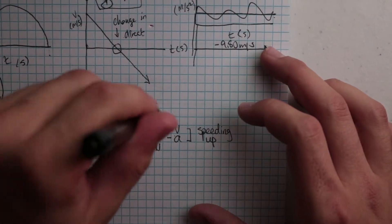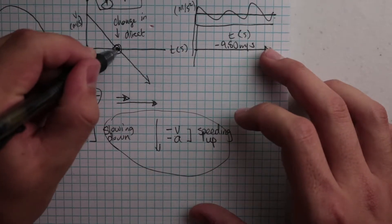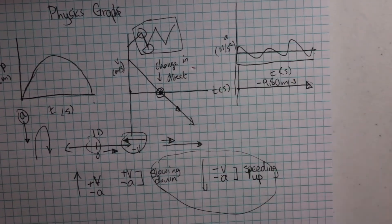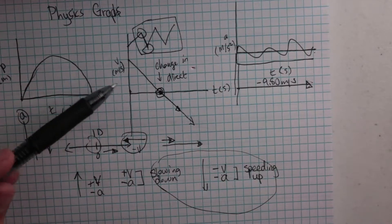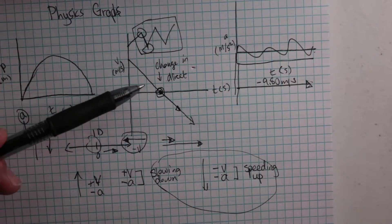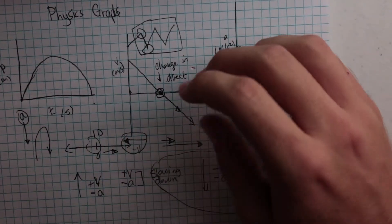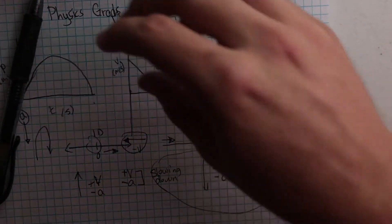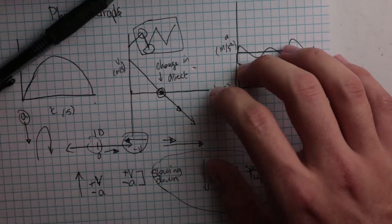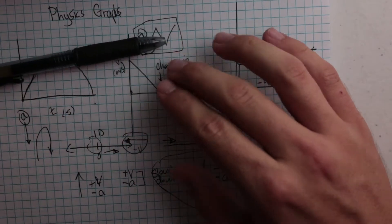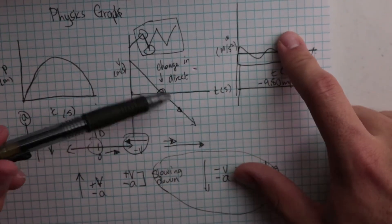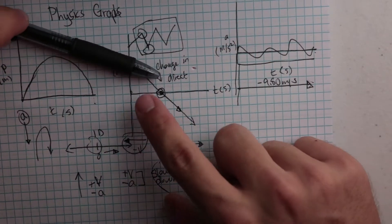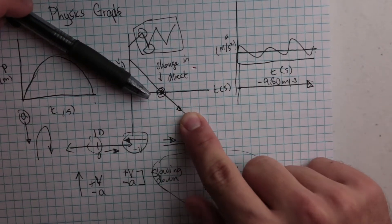Some interesting things to note: the derivative of the position-time graph is the velocity-time graph. If I use my pen as a tangent line, I start out with a very high velocity - this is getting into some calculus. As I rise to the apex of the position-time graph, the tangent line flattens out to zero. That zero point, this relative maximum, corresponds to zero on the velocity-time graph. Then the slope of the tangent line becomes negative, which gives us those negative velocities.